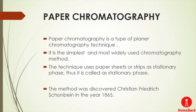This technique uses paper cells, strips, or cellulose papers as the stationary phase, which is why it is called paper chromatography. All chromatography methods share the same principle: they use two phases — a stationary phase and a mobile phase. In paper chromatography, the cellulose paper serves as the stationary phase.